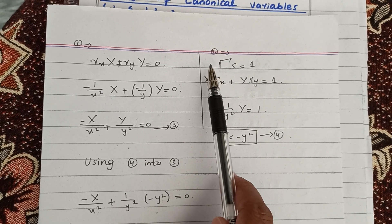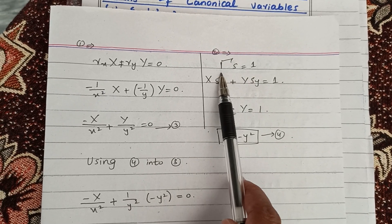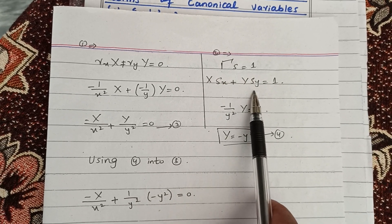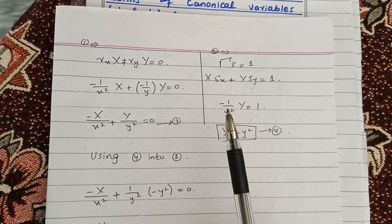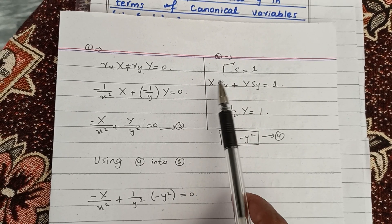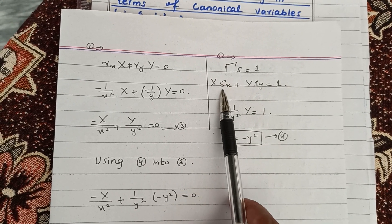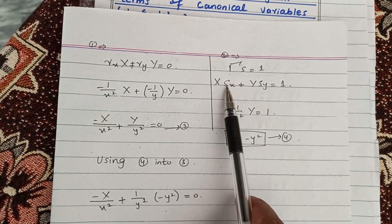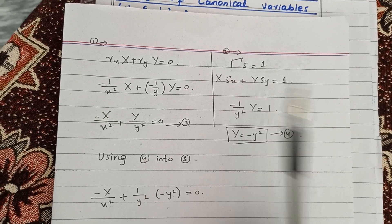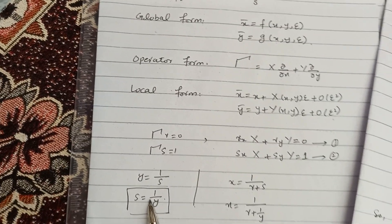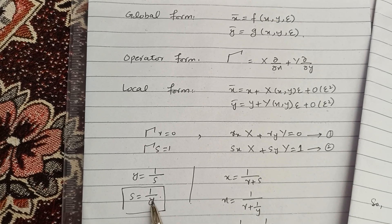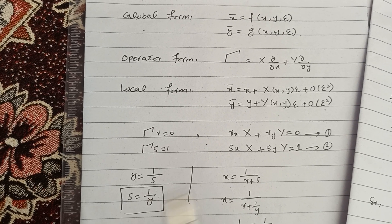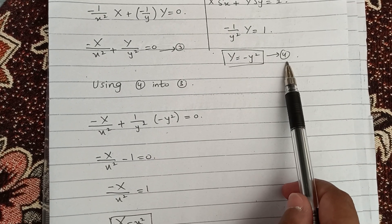Equation 3 comes from γr = 0. For γs = 1, the partial derivative of s with respect to x is 0, since s = 1/y and x is treated as a constant, so its derivative equals zero. This gives us equation 4.